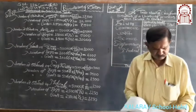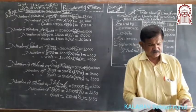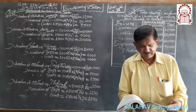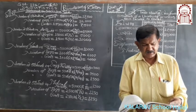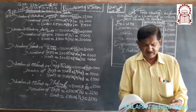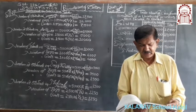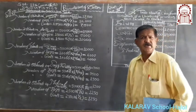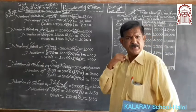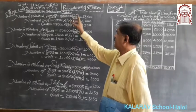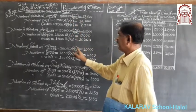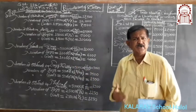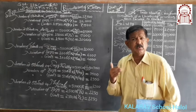In a university, out of total 50,000 students: 35% are in commerce faculty, 30% are in arts faculty, 20% are in science faculty, 10% are in engineering faculty, and the remaining 5% are in medical faculty. First of all, we calculate the total number of students faculty-wise.